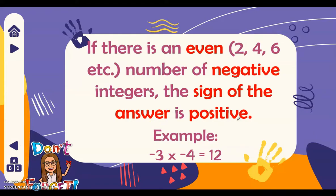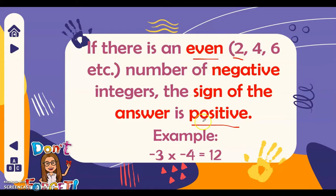If there is an even number of negative integers — 2, 4, 6, 8 and so on — the sign of the answer is positive. For example, negative 3 times negative 4 is 12, and since there are two negative integers, which is even, therefore the sign is positive. The sign of the answer is positive 12.